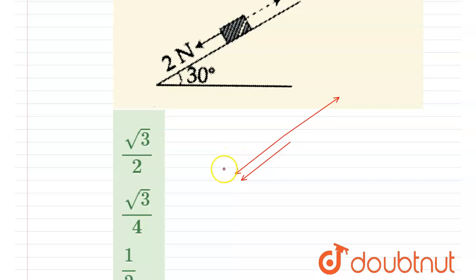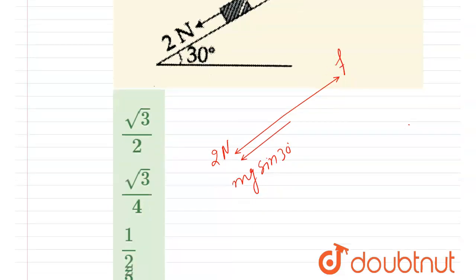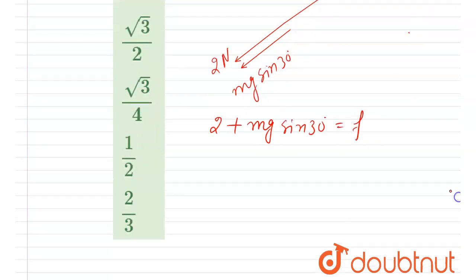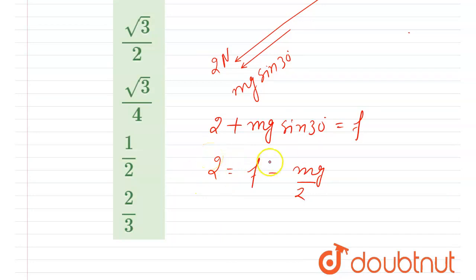Here I will write mg sin 30° and the friction force. So I write: 2 + mg sin 30° = f_max. From here you can write 2 = f_max − mg sin 30°. Since sin 30° = 1/2, this 2 newton is the maximum force that can be applied downward, which equals the maximum friction force.